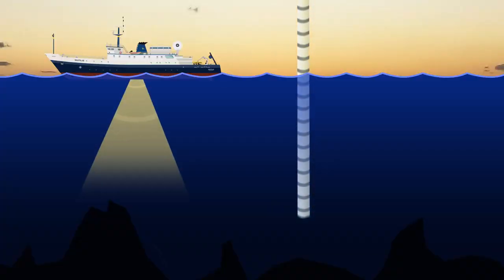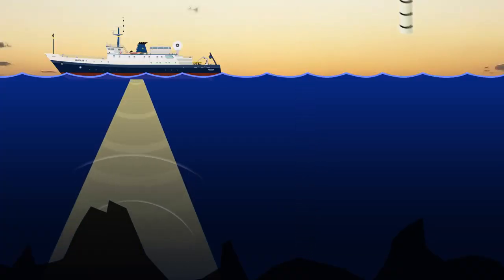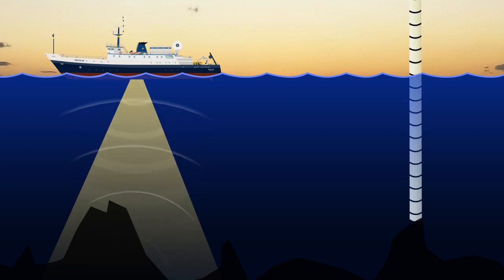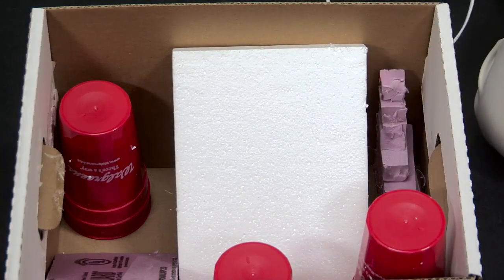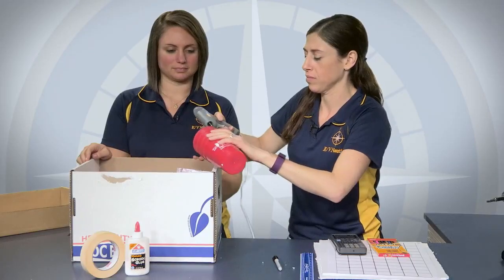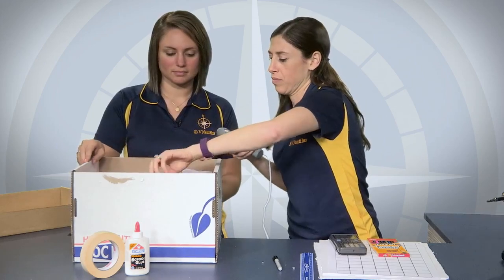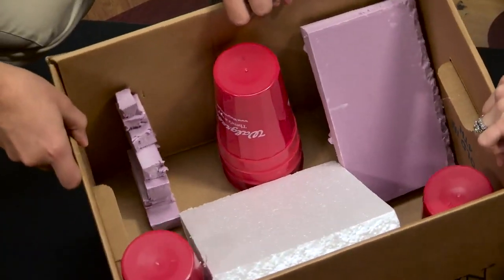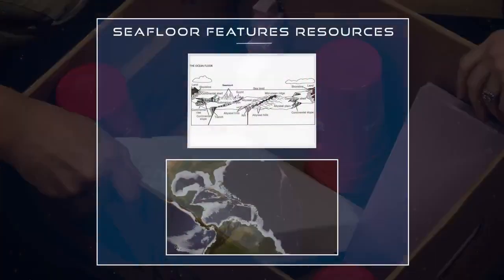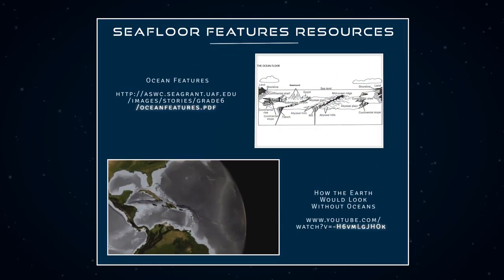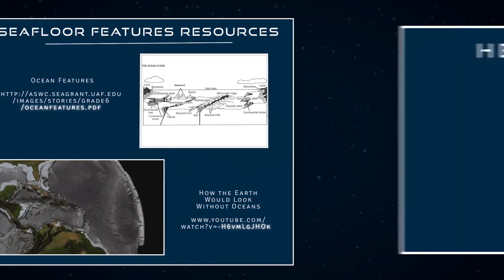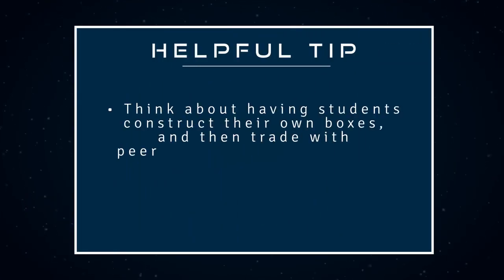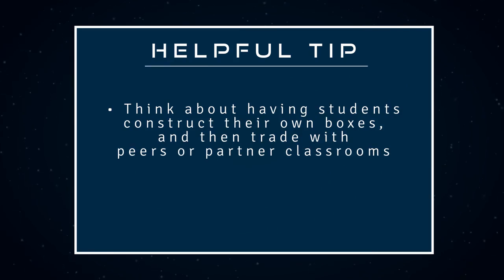Students will use a wooden dowel to simulate sonar pings traveling through the water column and bouncing off different seafloor terrain. Arrange elements in the boxes to simulate real seafloor features or simple shapes, and secure your seafloor to the box. If you would like to model boxes after real seafloor features, such as seamounts, trenches, shipwrecks, or vent fields, check out these additional resources. You may want to think about having students construct their own boxes and then trade with peers or partner classrooms. Choose your level of creativity with this.